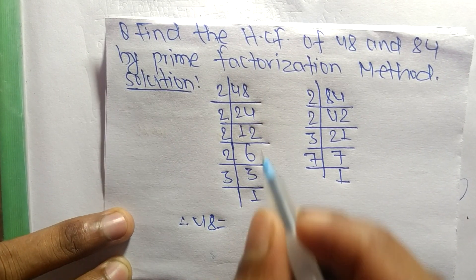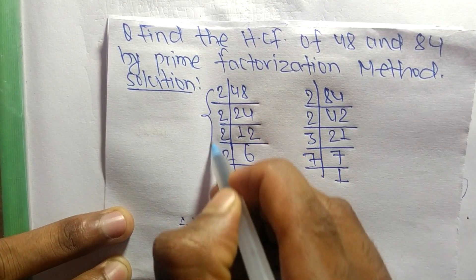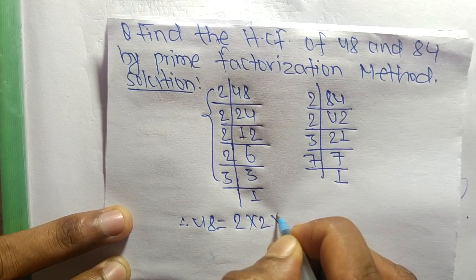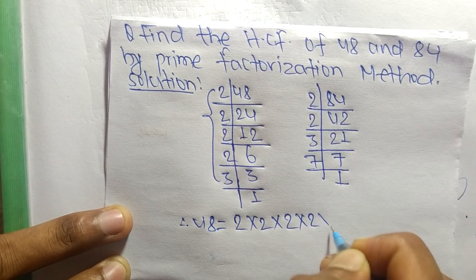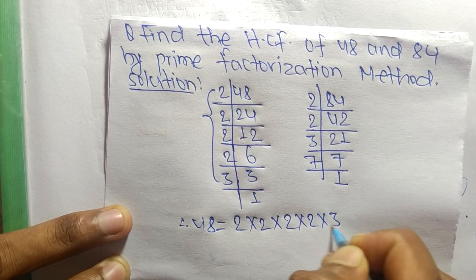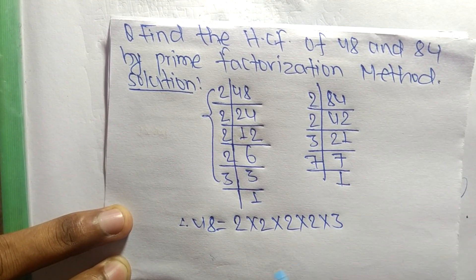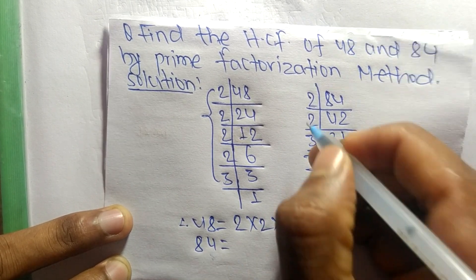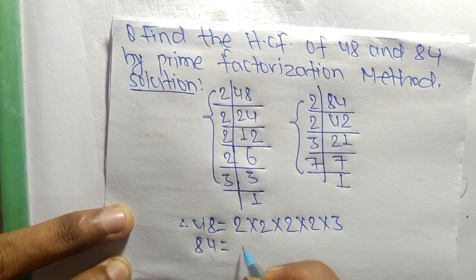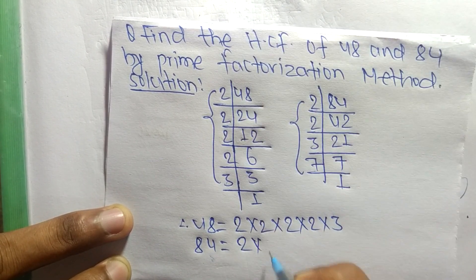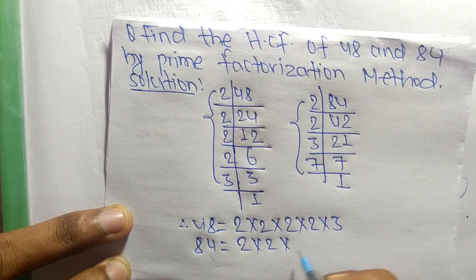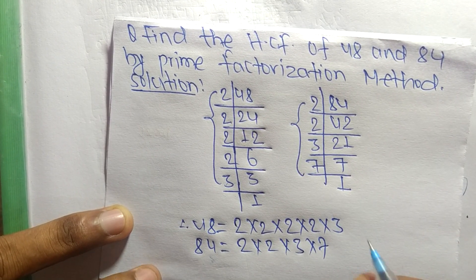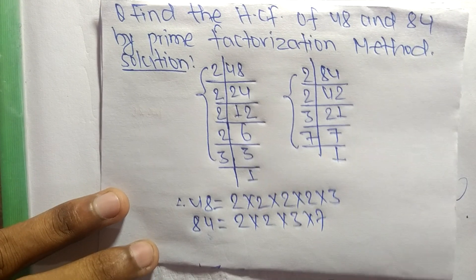From these prime factors we can write: 48 is equal to 2 × 2 × 2 × 2 × 3, and likewise 84 is equal to 2 × 2 × 3 × 7.